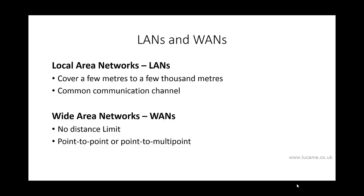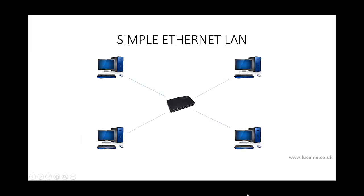As the name implies, LANs cover shorter distances than WANs — typically from a few meters to a few thousand meters. There's no limit on the distances covered by WANs, although there may be limits on individual WAN links. However, there's an even more fundamental difference: the way they are connected together. In a LAN, each network host is connected to a common communication channel such as an Ethernet hub, so each host can communicate directly with any other. Because of this, LAN technologies are often described as broadcast technologies, where one host can send data picked up by every other host.